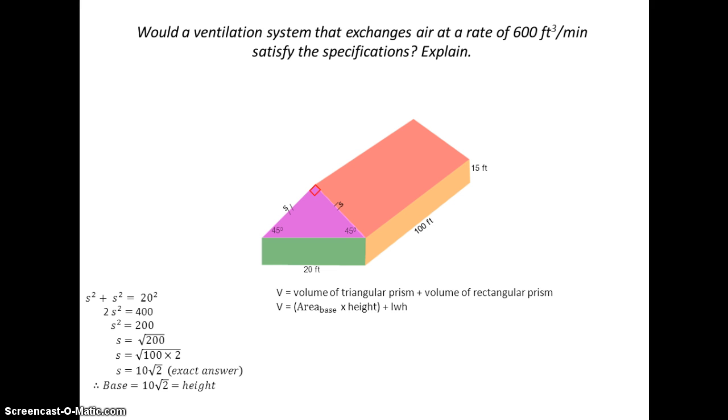So there are my formulas that I'm going to use. The area of the base of this triangular prism, 10 root 2 times 10 root 2, half base times height, right there, times 100.